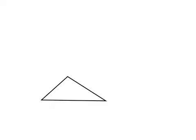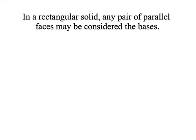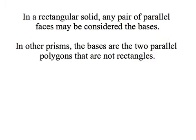Here's a triangle where the three sides all have different lengths, but we can still make a matching triangle that's parallel to the first one, connect the corners, and we have another triangular prism. In a rectangular solid, any pair of parallel faces may be considered the bases. In other prisms, the bases are the two parallel polygons that are not rectangles.